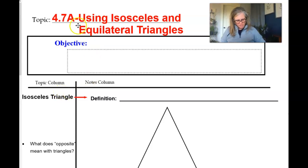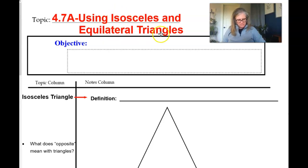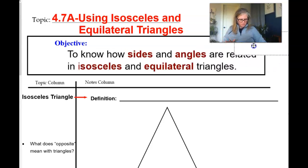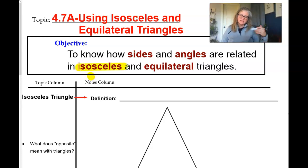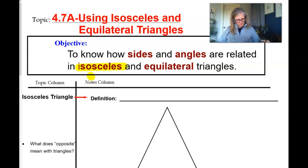Hi gang, we are working on our 4.7 notes. We are going to be talking about isosceles and equilateral triangles. Our goal for the day is to know how sides and angles are related in isosceles triangles. For this video, we are going to talk just about isosceles triangles, and then in the next video we're going to talk about equilateral triangles. So we're going to focus on isosceles right now.